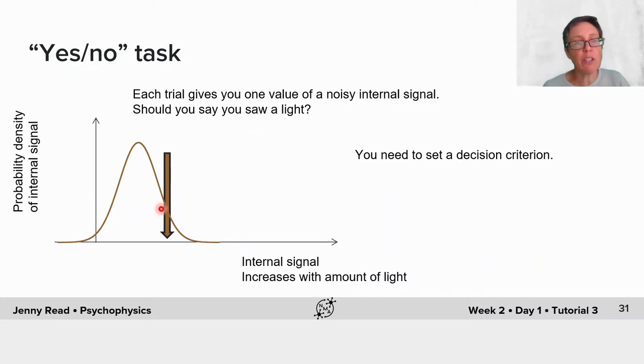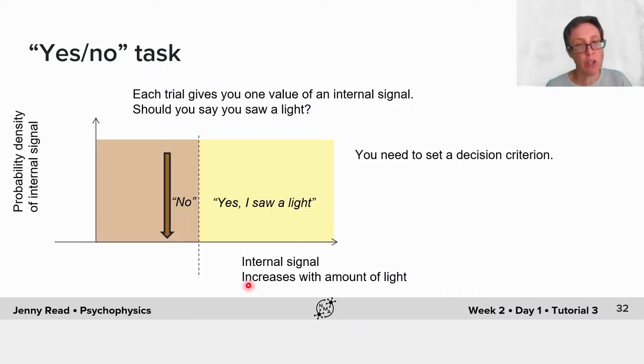Now let's think what is happening inside the subject on each trial of this yes-no task. On each trial, they're effectively only getting one value, one pick from this distribution. For example, the value shown by this brown arrow. And they have to decide, did I see a light or not? To answer that, you have to set some kind of internal decision criterion.